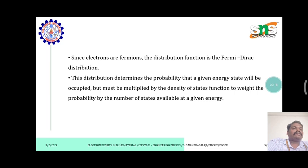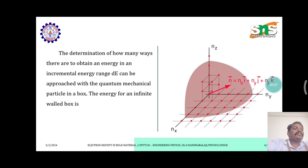Since electrons are fermions, the distribution function is the Fermi-Dirac distribution. This distribution determines the probability that a given energy state will be occupied but must be multiplied by the density of state function to weight the probability by the number of states available at the given energy. The determination of how many waves there are to obtain an energy in an instrumental energy range dE can be approached with the quantum mechanical particle in a box.